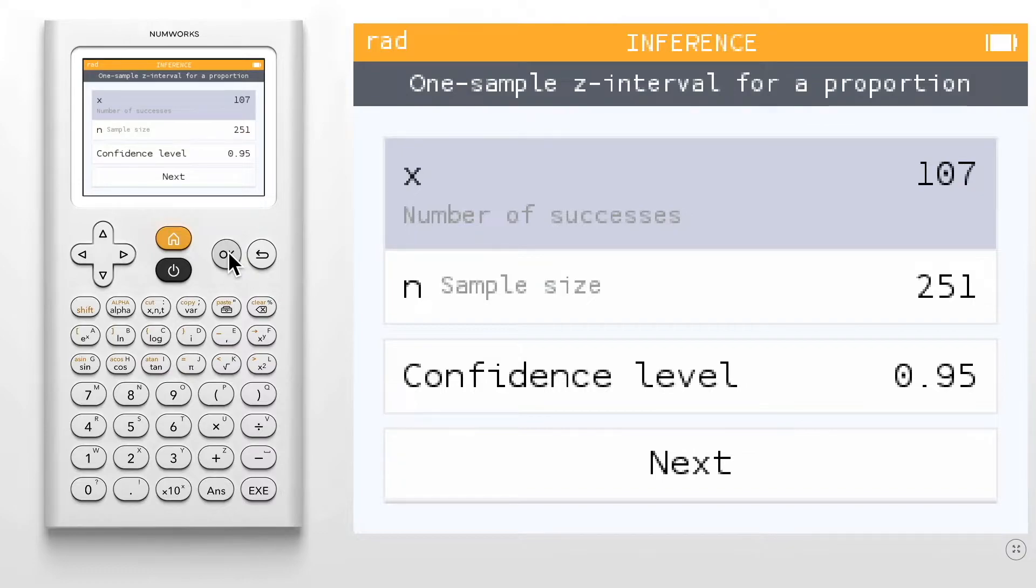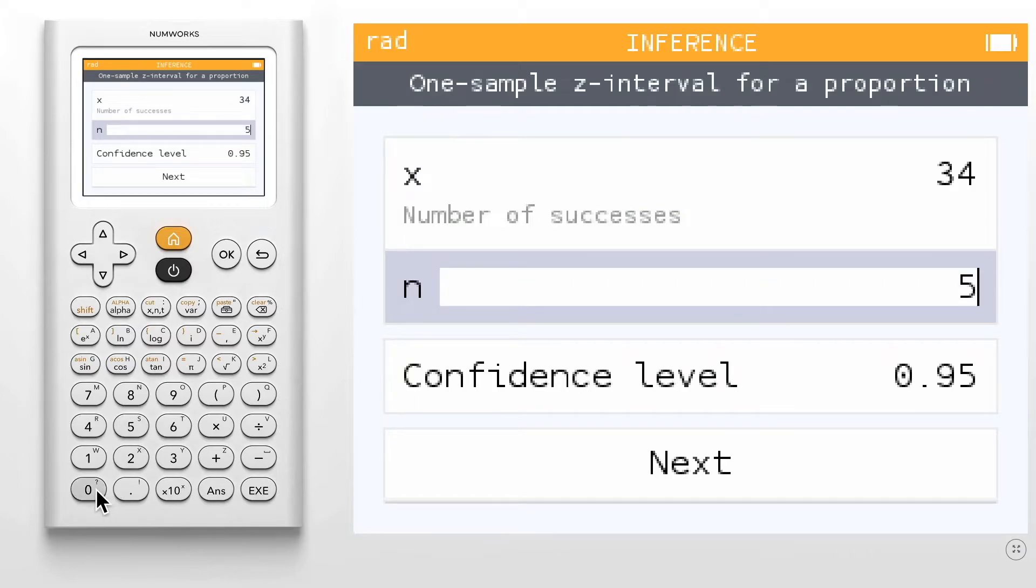The first step is to enter the relevant values from the sample. For the one sample z interval, we enter the number of successes and the sample size. For this example, we will use 34 and 50.